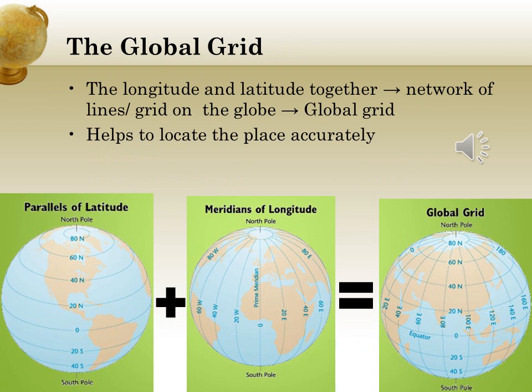What will happen if we draw a horizontal line and on top of it we draw a vertical line? Yes, it will form a cross. Likewise, the latitudes and longitudes together form a network of lines on the globe. This network of lines is called a grid, known as the global grid. If we know the longitude and the latitude of a place, we can locate the place accurately with the help of the global grid.